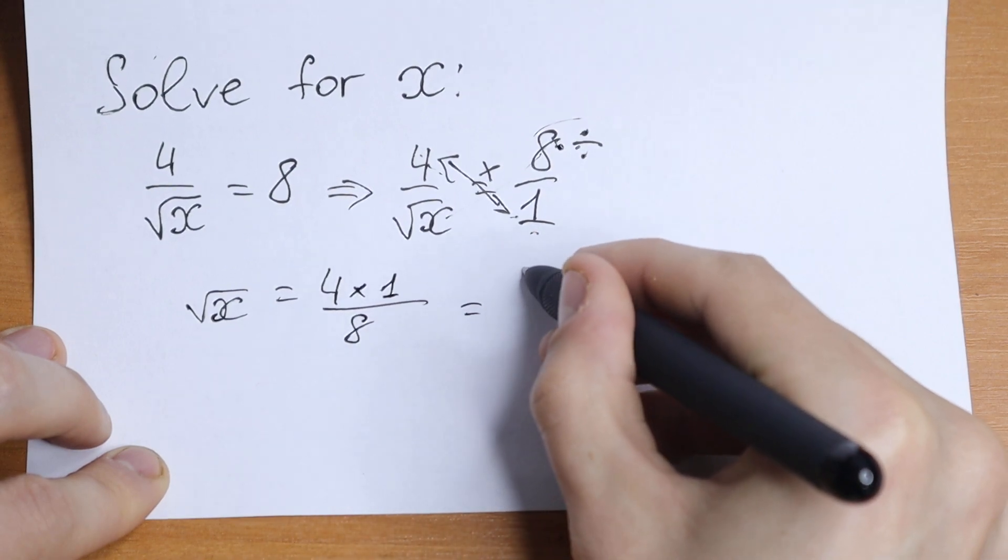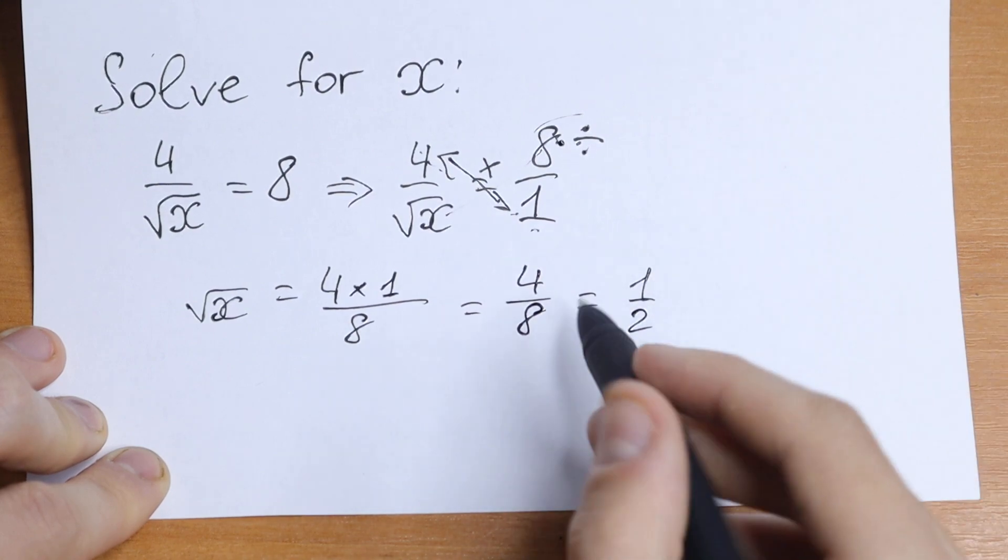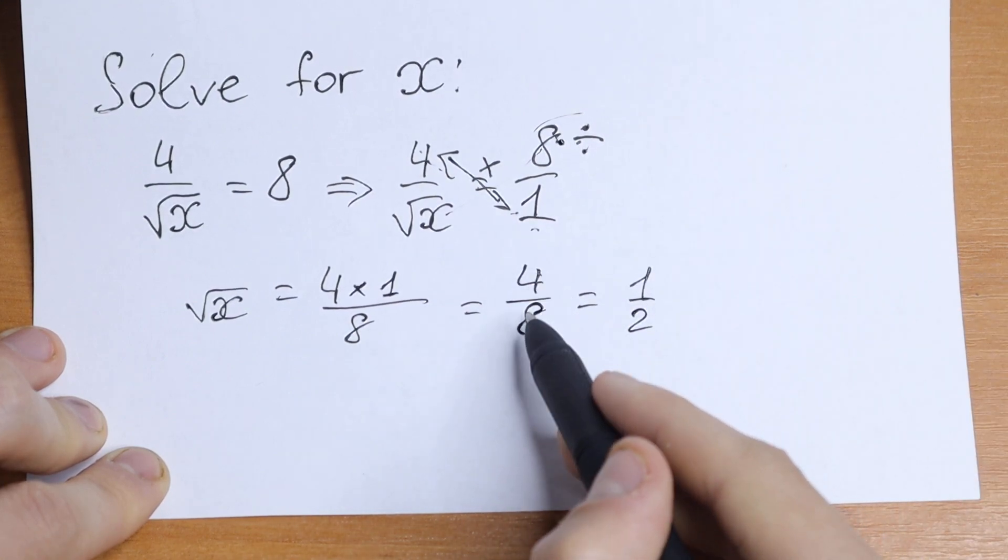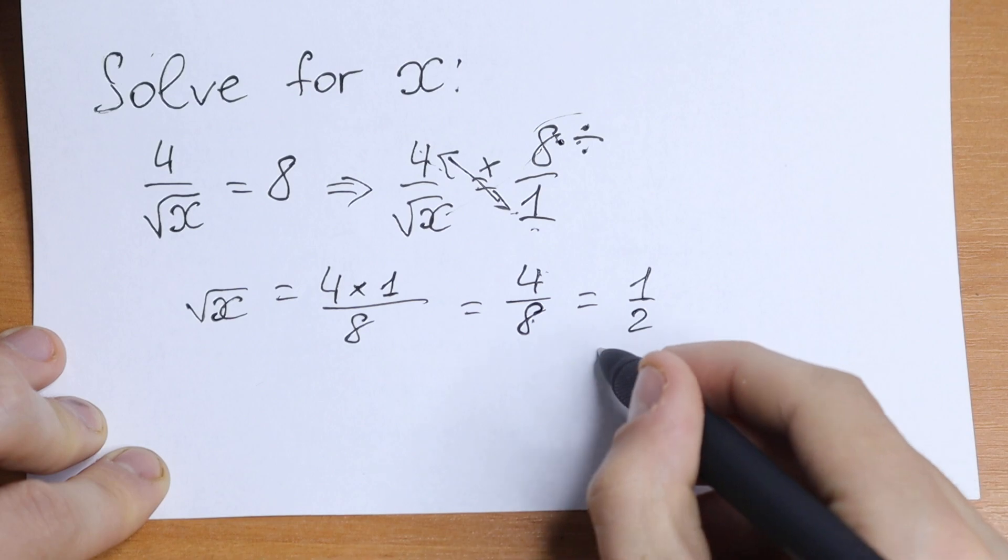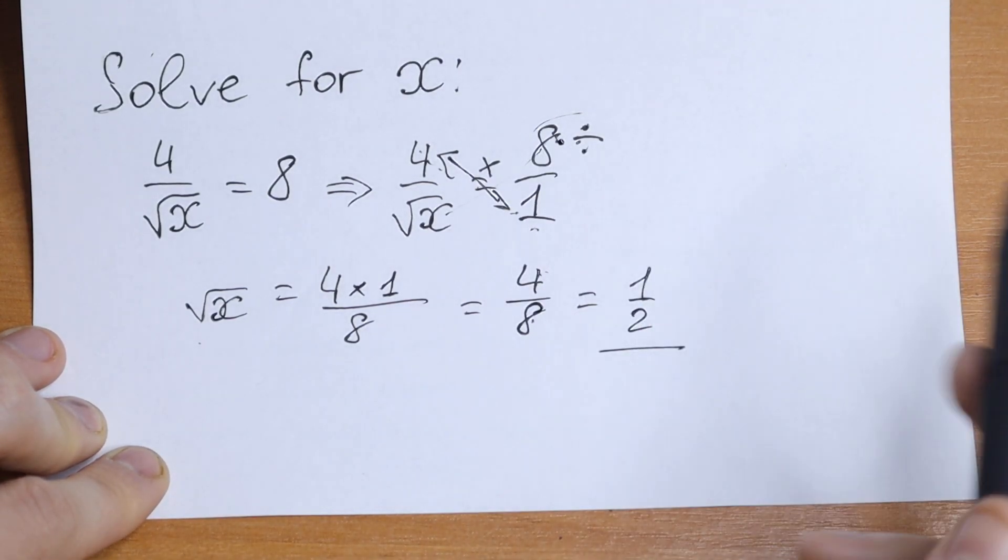As a result we will have 4 over 8 which is equal to 1 half because we need to divide both sides, numerator and denominator, by 4. We will have that square root of x equal to 1 half using cross-multiplying.